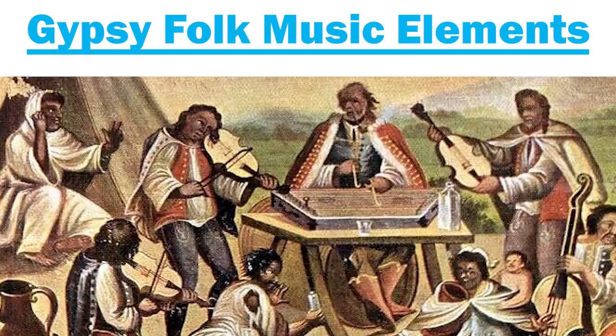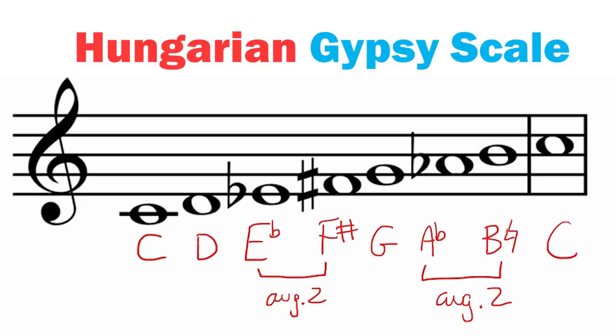Let's talk about some gypsy folk music elements that Liszt incorporated into his Hungarian Rhapsodies. An element he liked to use was the Hungarian gypsy scale. Basically, the Hungarian gypsy scale is a harmonic minor scale but it has an extra augmented second in it, which makes it sound extra funky and harmonic with the fourth note being raised. This is also a common scale in flamenco music.